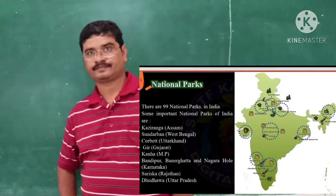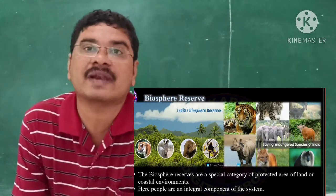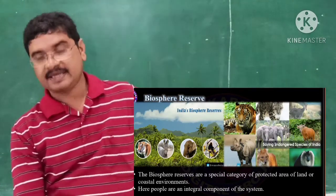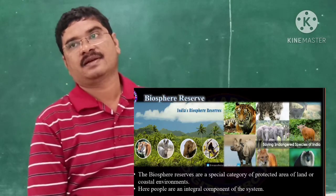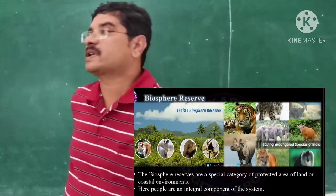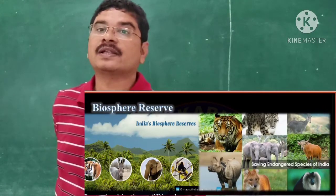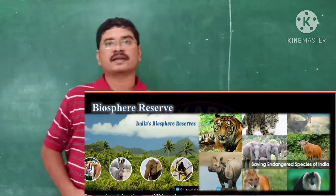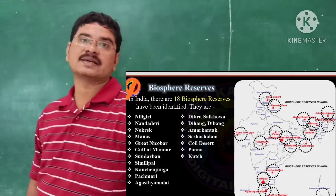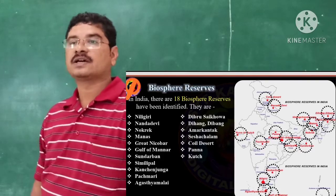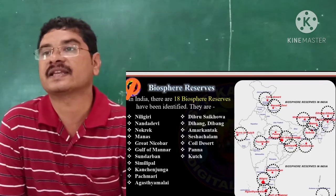Biosphere Reserves are a special category of protected area of land or coastal environments where people are an integral component of the system. The main objectives of Biosphere Reserves are conservation, research, education, and local environment. In India, there are 18 Biosphere Reserves, including Nilgiri, Nanda Devi, Nokrek, Manas, Great Nicobar, Gulf of Mannar, Sundarbans, Similipal, Kanchenjunga, Pachmarhi, and many others.